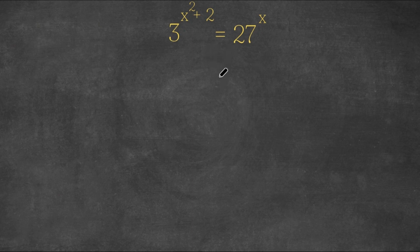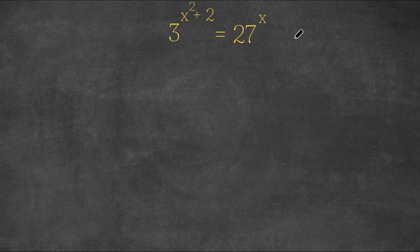In today's video I'm going to be teaching you guys how to solve this exponential equation. So we have 3 to the power of x squared plus 2 equals 27 to the power of x. What we first want to do is make our bases the same, because whenever we're solving for exponential equations we always want to make our bases the same to make the equation easier to solve.